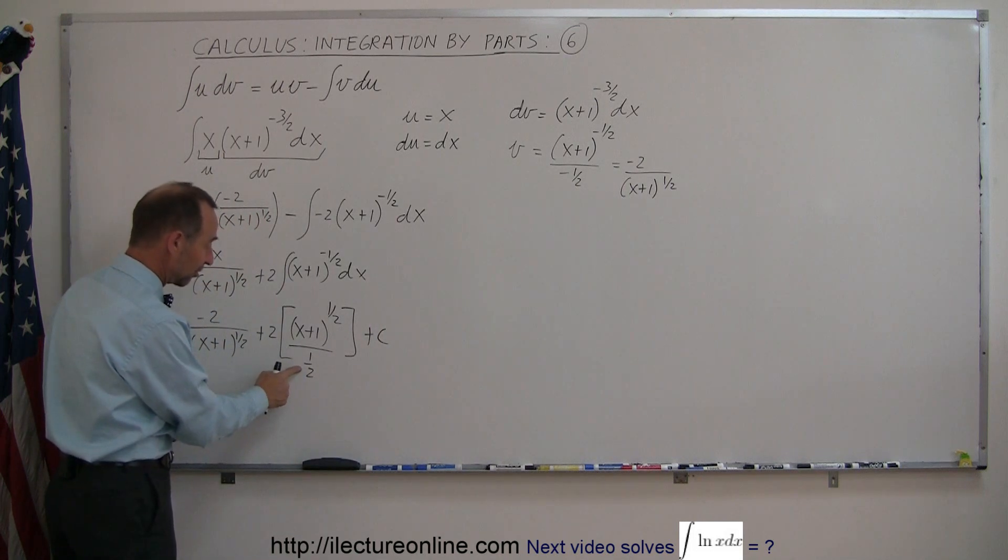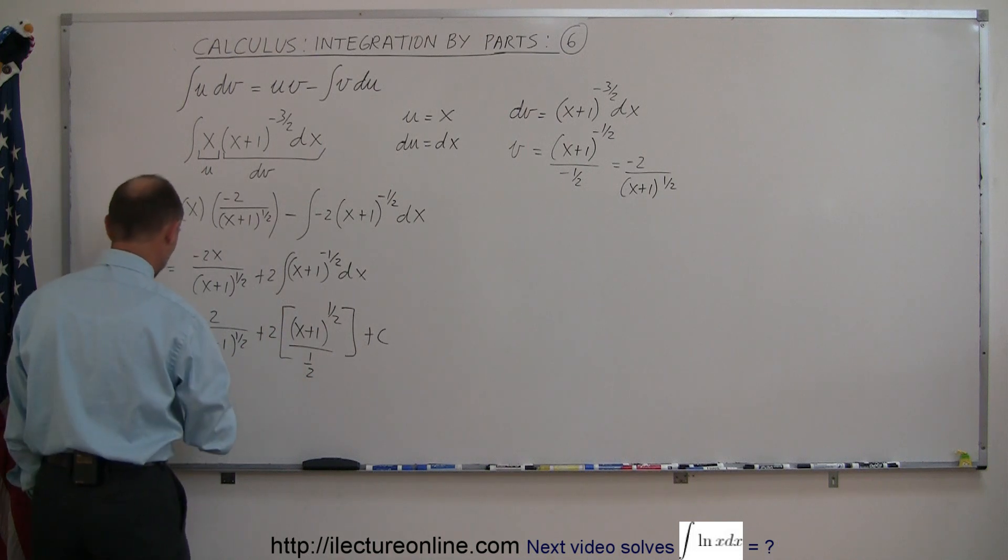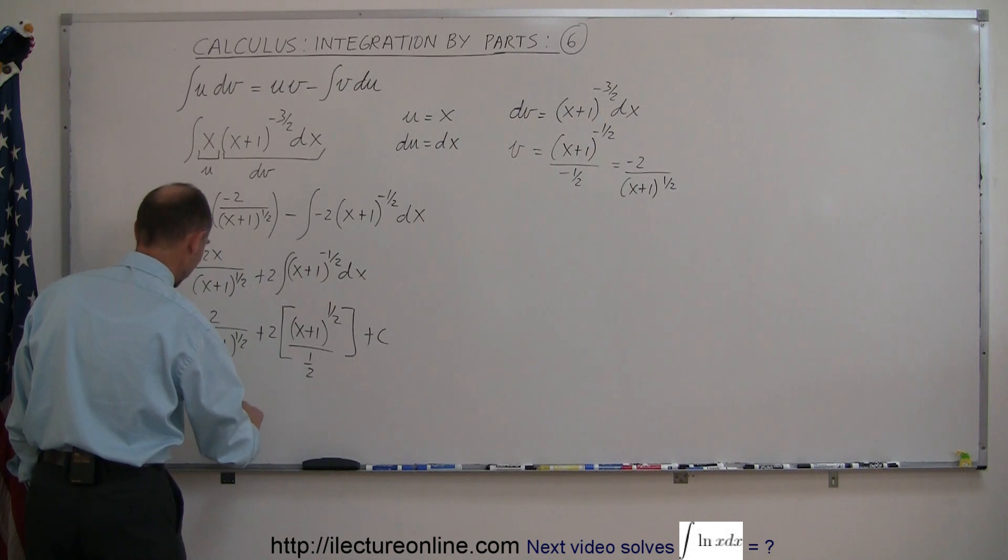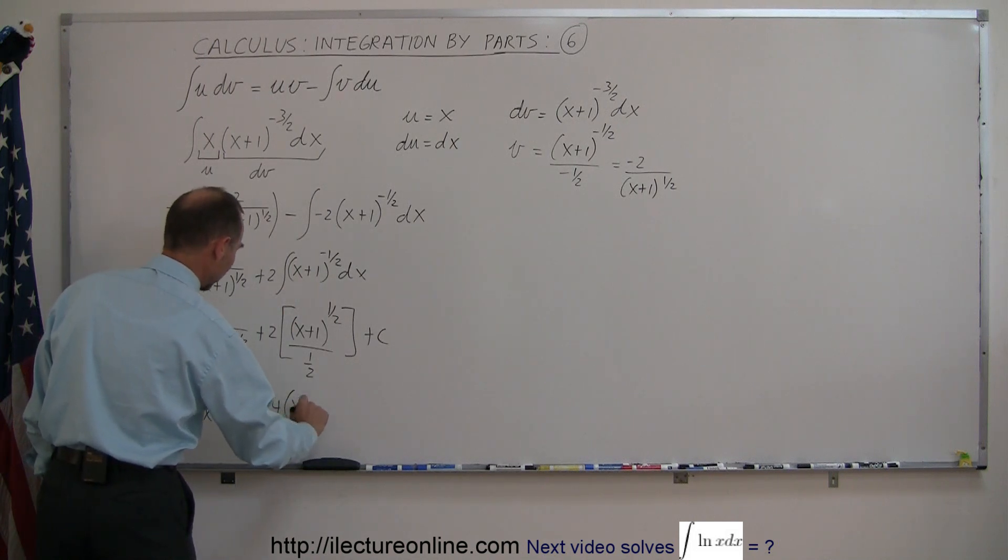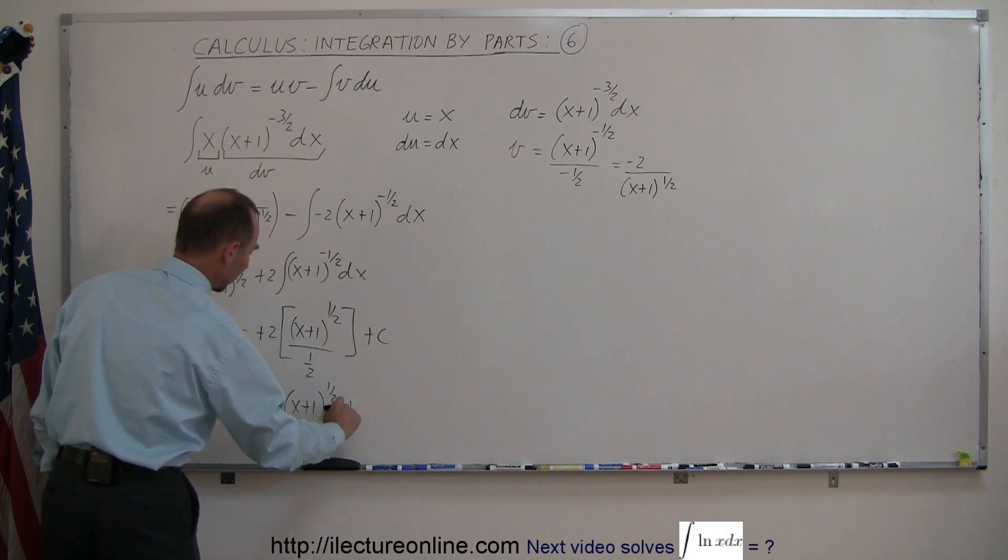Of course when we divide by a fraction it's the same as multiplying by its inverse so that becomes 4. So we end up with minus 2x over (x+1) to the 1 half power plus 4 times (x+1) to the 1 half power plus c.